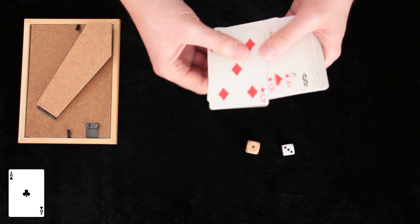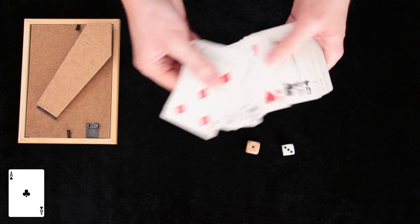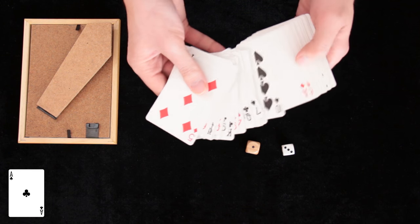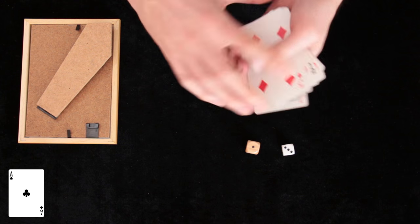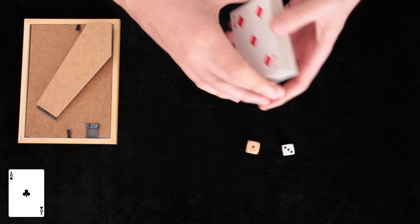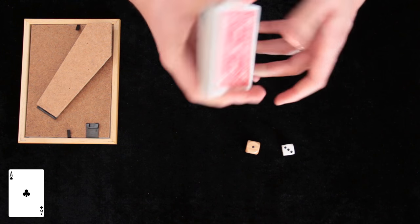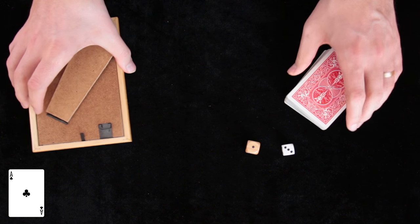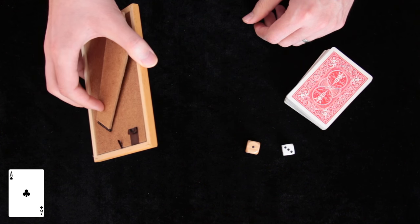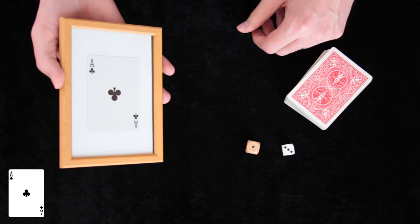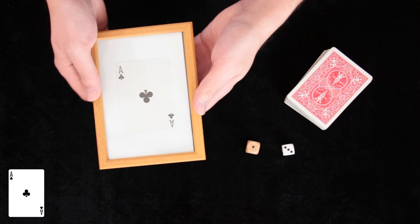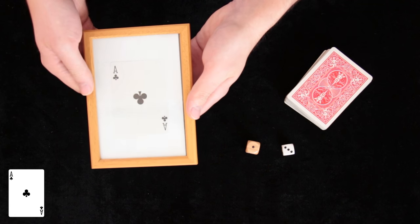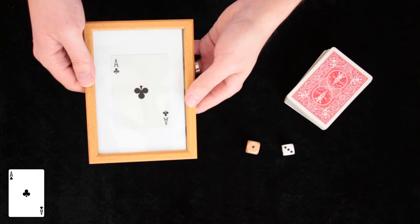It seems your card then vanished from the deck, but this is not making any sense at all. It has to be somewhere. Maybe we can check again the frame. And now, now there is a card inside, Ace of Clubs, was this your selection?